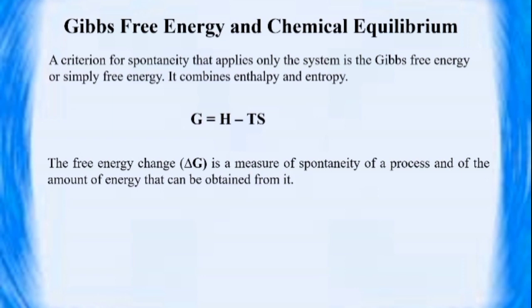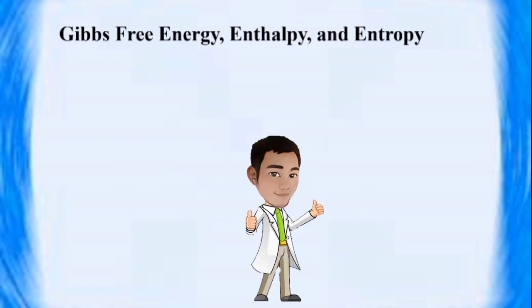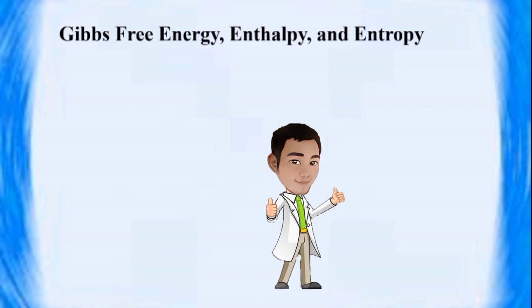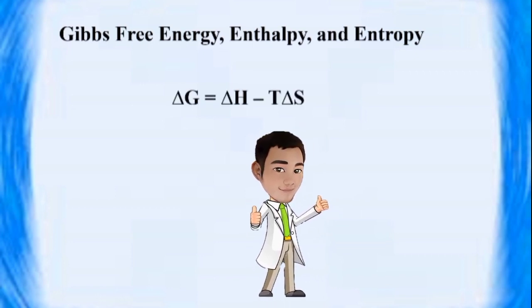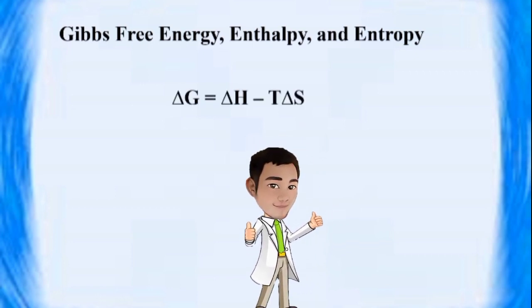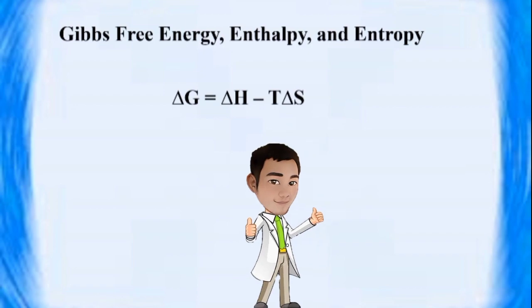Just like other thermodynamic state properties, delta G is determined from the difference in values of two different states: delta G is equal to G final minus G initial. By using the changes in enthalpy and the changes in entropy at constant temperature, we have the equation delta G is equal to delta H minus T delta S.